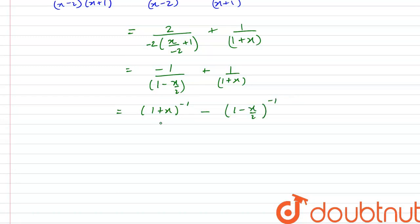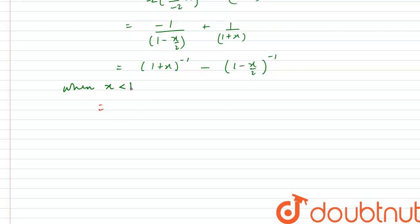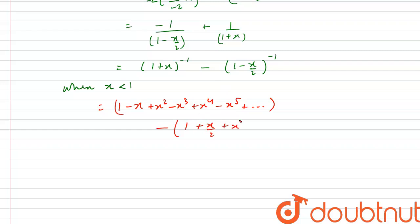We apply the binomial theorem to expand both terms. This is valid when the absolute value of x is less than 1. The first term expands as 1 minus x plus x squared minus x cubed plus x to the power 4 minus x to the power 5 and so on. The second term expands as minus the quantity 1 plus x/2 plus x squared over 2 squared plus x cubed over 2 cubed plus x to the power 4 over 2 to the power 4, and so on.